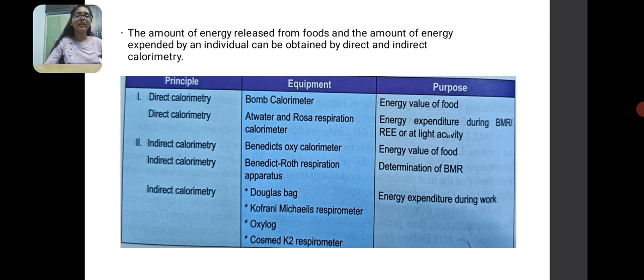Indirect calorimetry consists of equipment like Benedict's oxy calorimeter, Benedict's Roth respiration apparatus, Douglas bag, Kofranyi Michaelis respirometer, Oxylog, and Cosmed K2 respirometer, which give the energy value of food and help determine basal metabolic rate and energy expended during work.